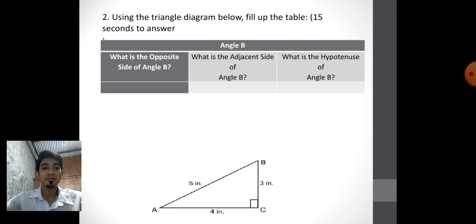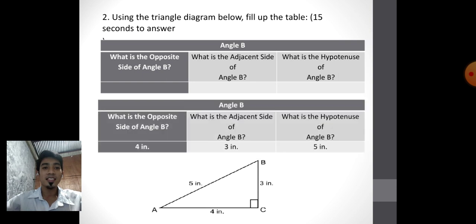Next! What is the opposite side of angle B? What is the adjacent side of angle B? What is the hypotenuse of angle B? Our reference angle here is angle B. Time's up! These are the answers: the opposite side of angle B is 4 inches, the adjacent side of angle B is 3 inches, and the hypotenuse of angle B is 5 inches.